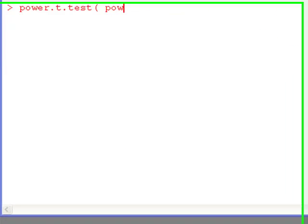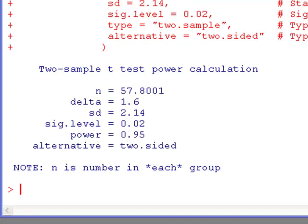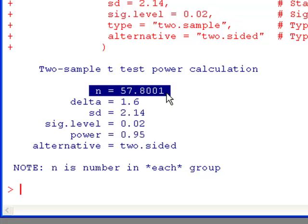So I run this, and I immediately see that the n that I'm going to need is 57.8. Well, like I mentioned before, you always round this up. Always round it up to the next integer. So in this case, it will be 58.